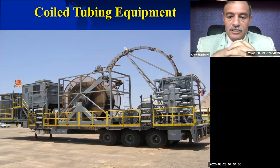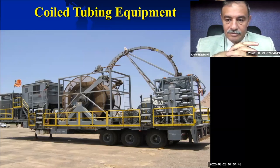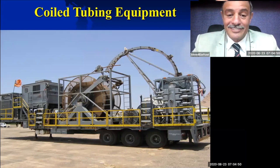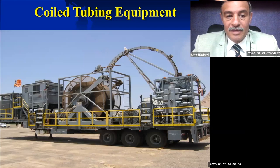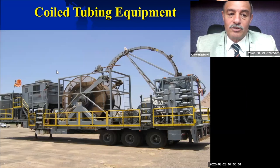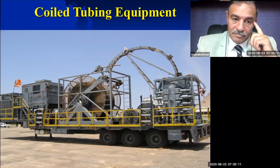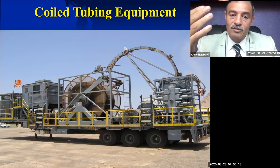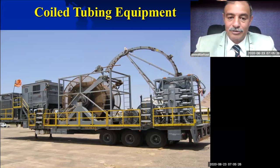What you see now is a coil tubing unit mounted on a trailer. This unit is in Oman — I took this picture in 2004. This is one of my babies. What you see is the complete components of the coil tubing: this part is the control cabin where you sit and control everything. And here is the reel which has pipe on it, where we coil our coiled tubing — you have 20-30 tons of pipes mounted on this reel.